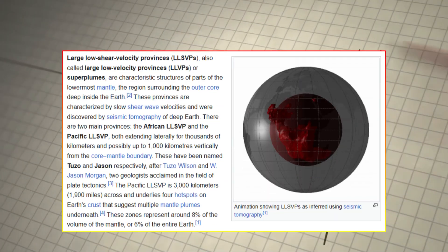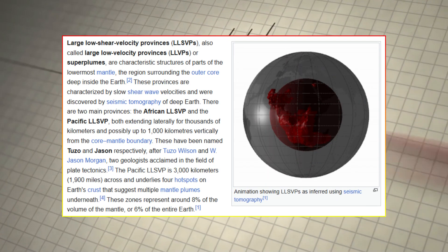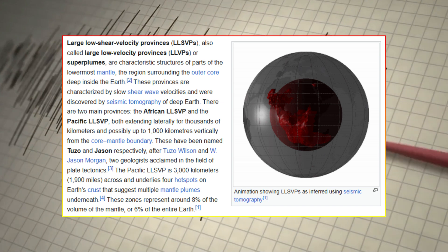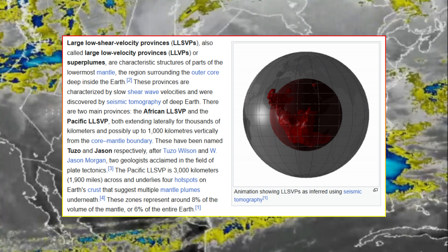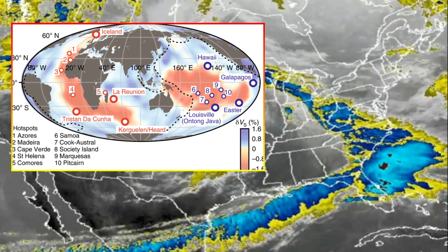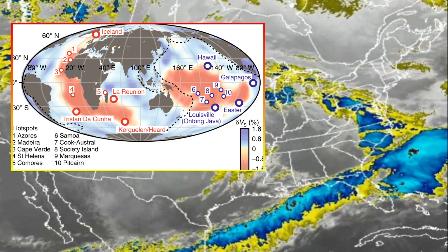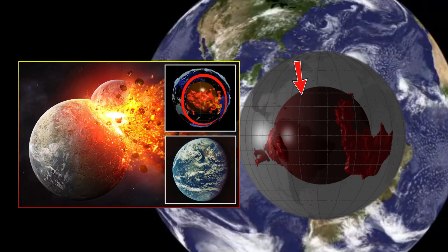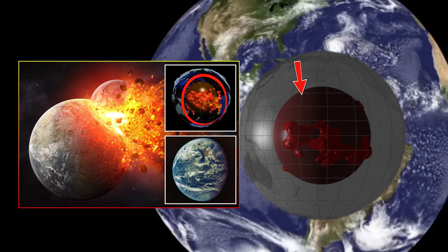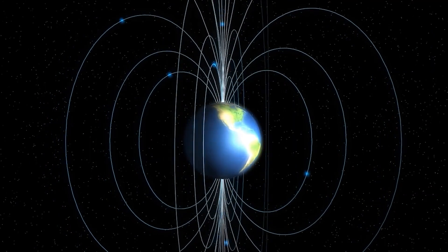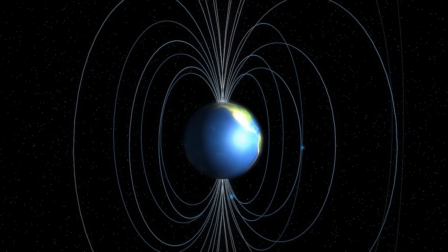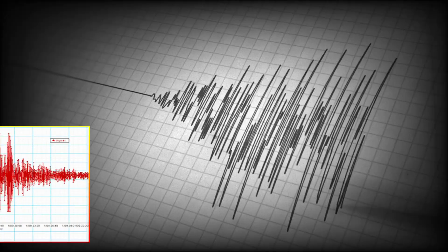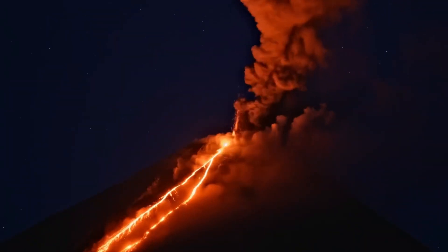These seismic anomalies, known as LLSVPs, have baffled scientists for years. They've been found beneath Earth's major tectonic plates, and their properties suggest they could be ancient remnants of Earth's earliest days, or possibly the result of massive planetary collisions. What's even more intriguing is how these anomalies could affect Earth's magnetic field, seismic activity, and even volcanic hotspots.